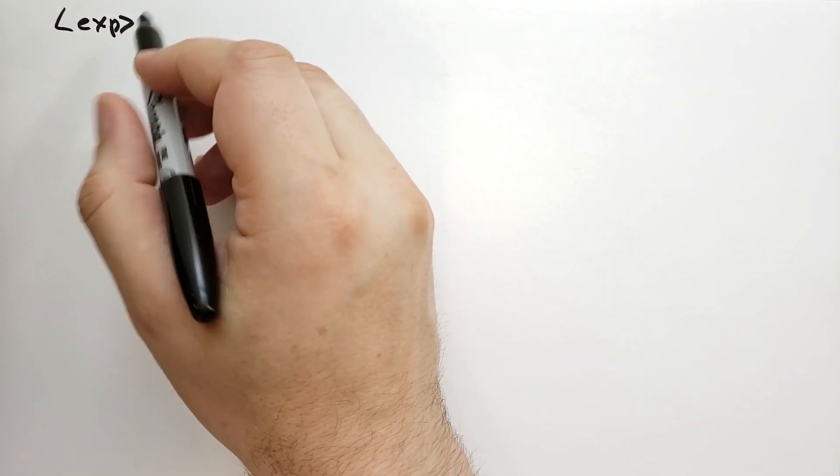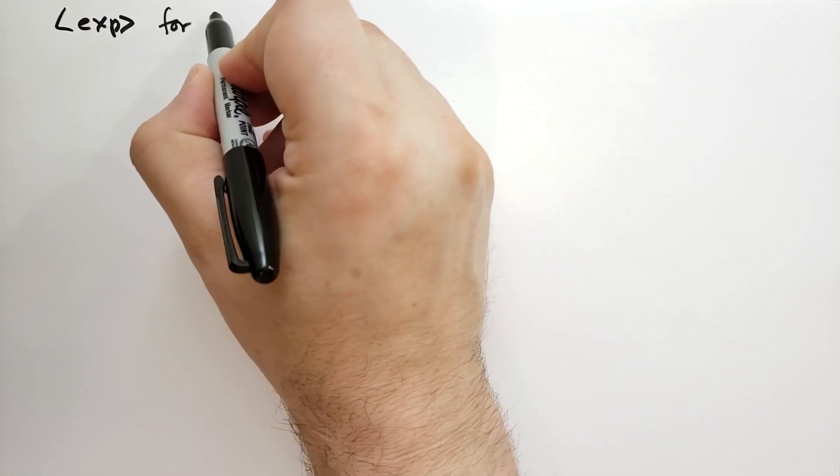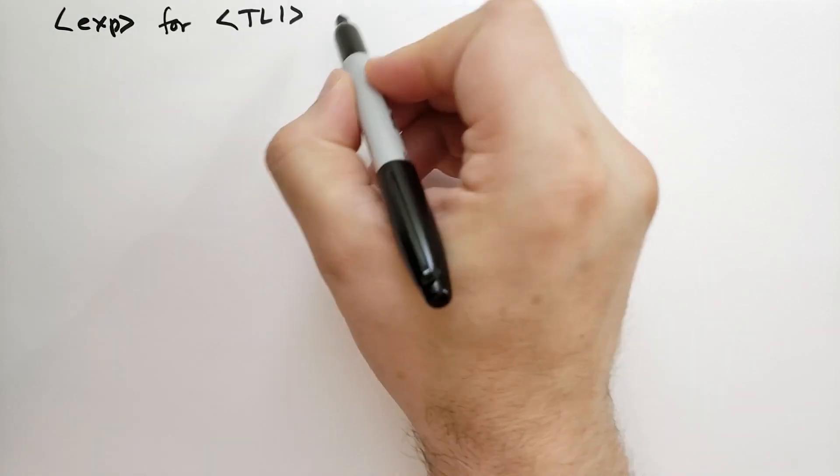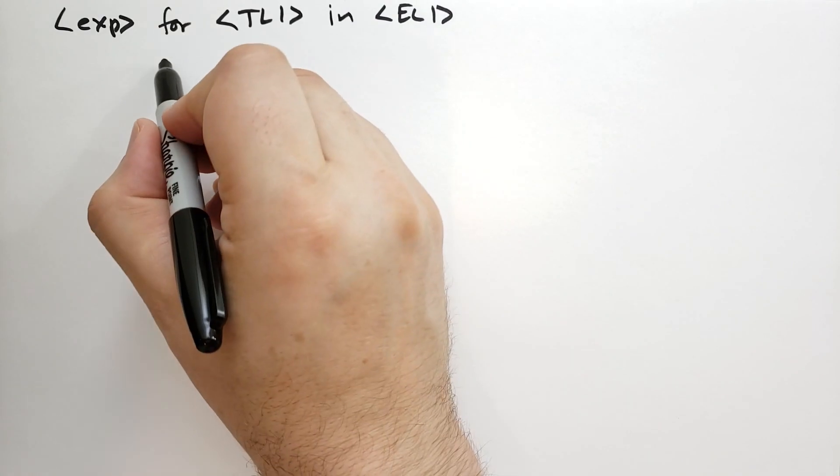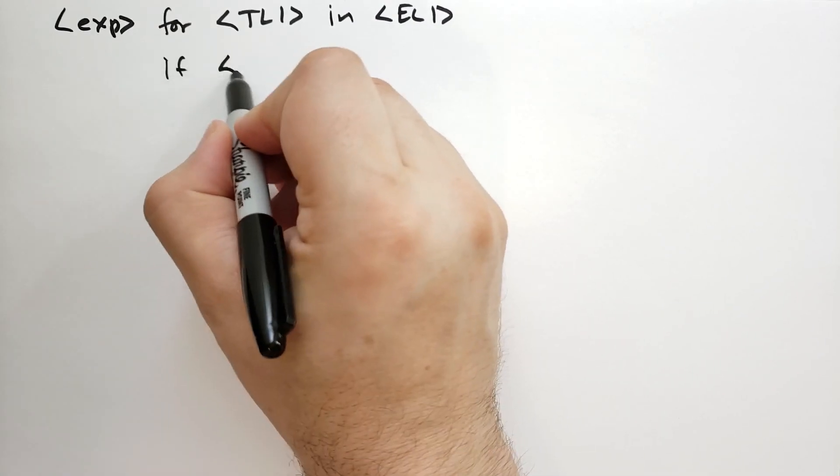So here's a very complicated comprehension. And I'll just kind of label the things rather than actually fill in the blank. So we have some expression for target list 1 in expression list 1. And then we're going to have if condition 1.